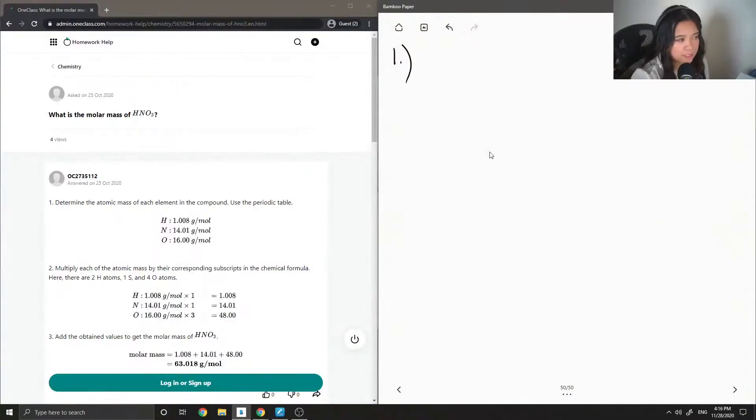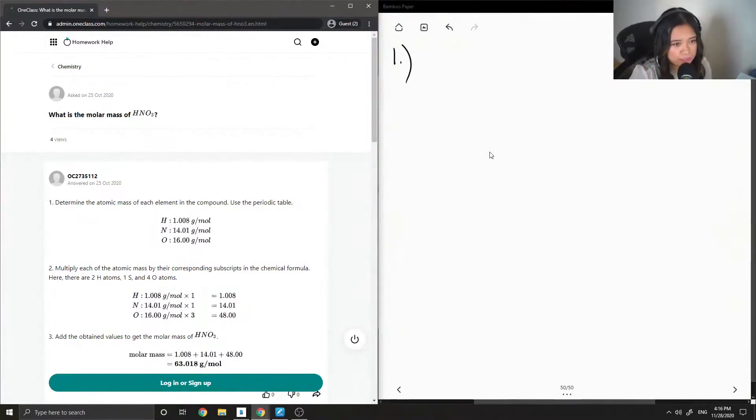Question one asks, what is the molar mass of HNO3? So to answer this question, we need the atomic masses of hydrogen, nitrogen, and oxygen.